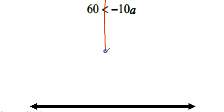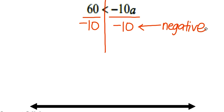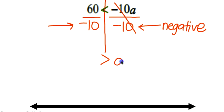Drawing my line — I see multiplication happening, so I'm going to divide. I'm dividing by negative 10 on both sides. Since I am dividing by a negative on both sides, my inequality symbol must flip: it was a less than sign, but now it becomes a greater than sign. The negative 10s cancel, leaving a, and 60 divided by negative 10 is negative 6.